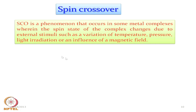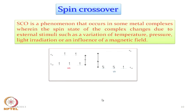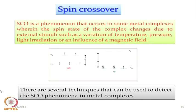Spin crossover (SCO) is a phenomenon that occurs in some metal complexes where the spin state changes due to external stimuli such as variation of temperature, pressure, light irradiation, or influence of a magnetic field. The right ligand system and metal ion must be chosen. The spin transition behavior can also be influenced chemically: by ligand replacement, change of non-coordinating anion, solvent of crystallization, or substitution of the spin-state-changing metal ion by another metal ion.